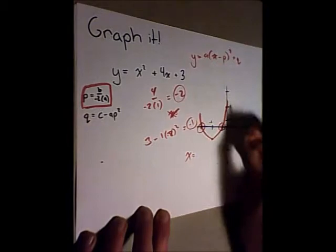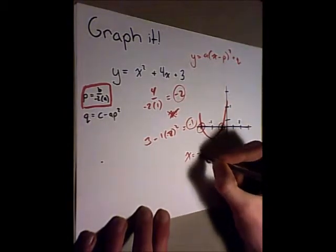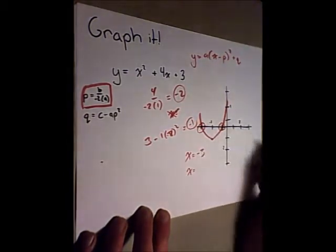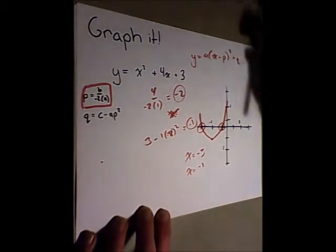And then these right here are our x-intercepts or our roots. So we can say that x is equal to negative 3 and x is also equal to negative 1. And that's how you solve by graphing.